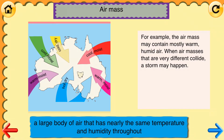Air mass. A large body of air that is nearly the same temperature and humidity throughout. For example, an air mass should contain mostly warm, humid air. When air masses that are very different collide, a storm may happen.